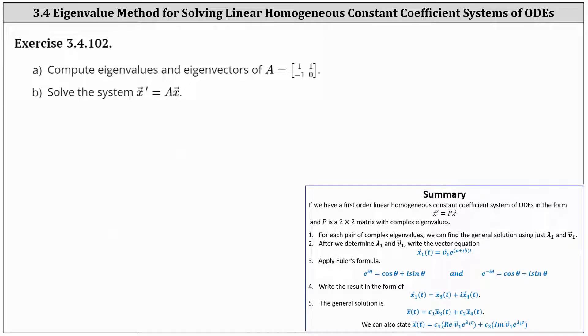We're asked to compute the eigenvalues and eigenvectors of the given two by two matrix A, and then solve the system represented by the vector equation x prime equals A times x.